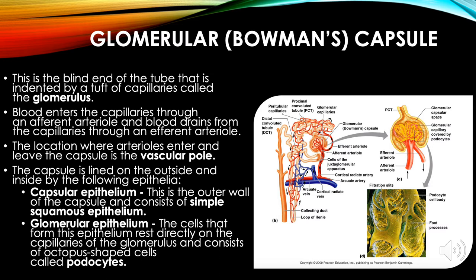The glomerular (Bowman's) capsule is the blind end of the tube that is indented by a tuft of capillaries called the glomerulus. Blood enters the capillaries through an afferent arteriole and drains through an efferent arteriole. The location where the arterioles enter and leave the capsule is the vascular pole.